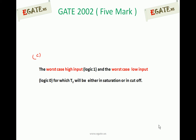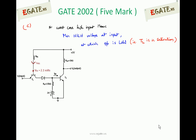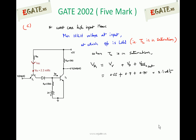Next, we calculate worst case high input and worst case low input voltages, for which the transistor is either in saturation or cutoff. Worst case high input means the minimum high voltage required at input such that the output will be under low condition. Since this acts as an inverter — it is a DTL gate with single input — if the input is high, the output will be low, since transistor T2 is in saturation. So worst case input high implies the minimum high voltage you must apply at input such that T2 will be in saturation and output will be low.